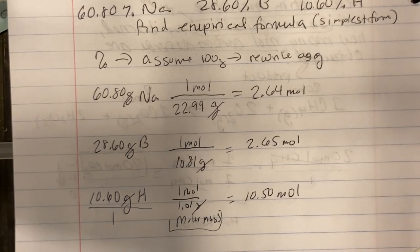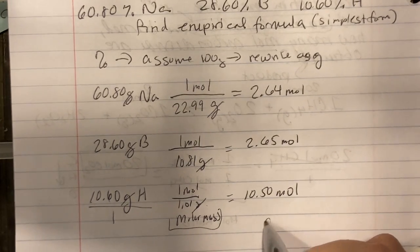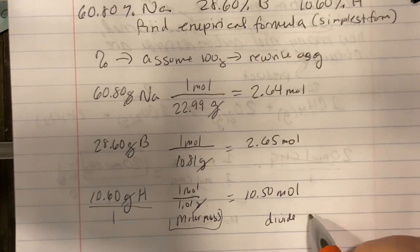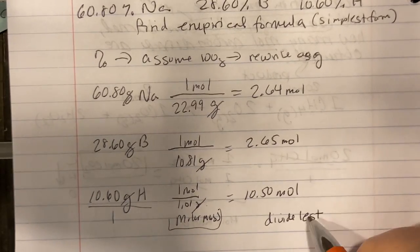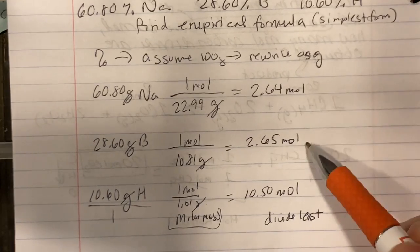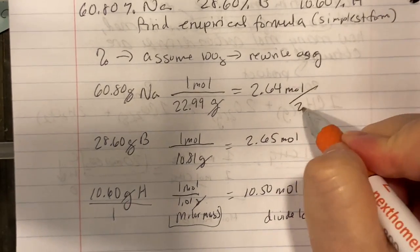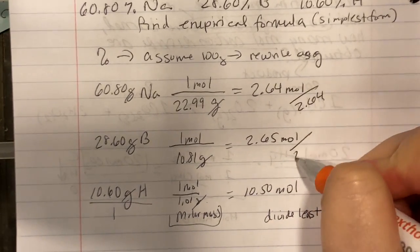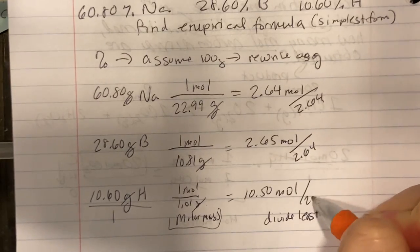And what we're doing here is now we are going to divide by the least. And what you do to one, you're going to do to all of them. So least is 2.64. So we're going to divide by 2.64 for every single one.